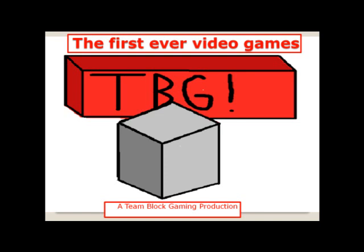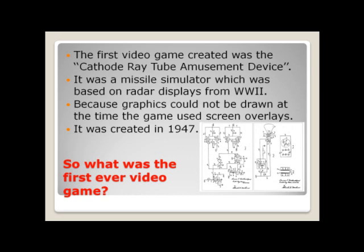The first ever video game created was the Cathode Ray Tube Amusement Device. It was a missile simulator game which was based on radar displays from World War 2. Because graphics could not be drawn at the time, the game used screen overlays to give you the idea of the target finder and stuff like that.